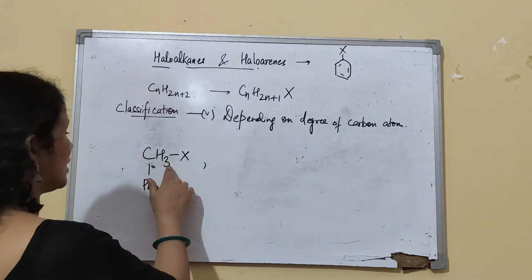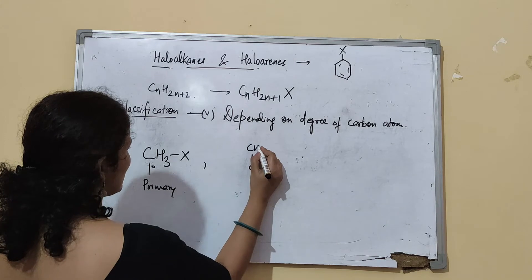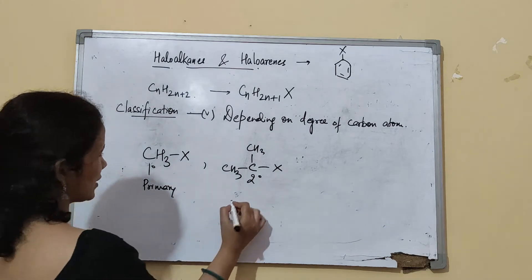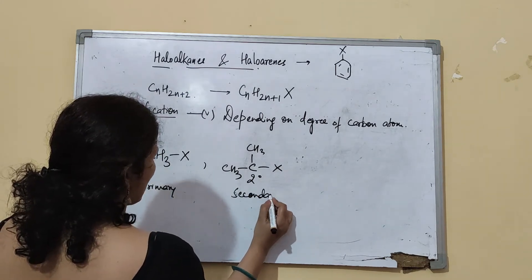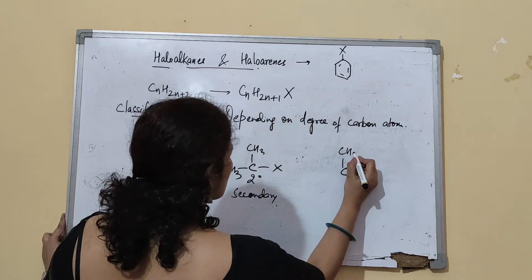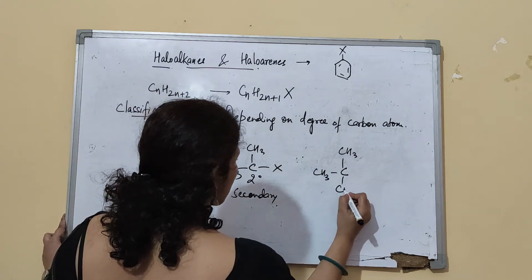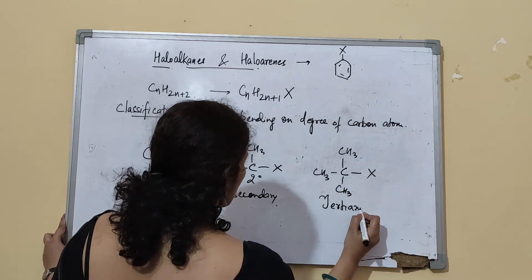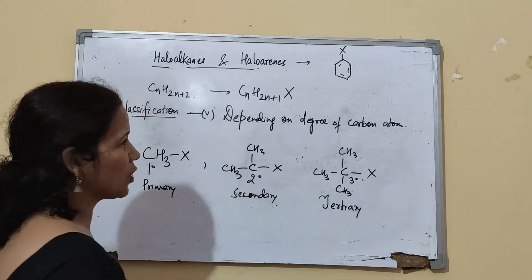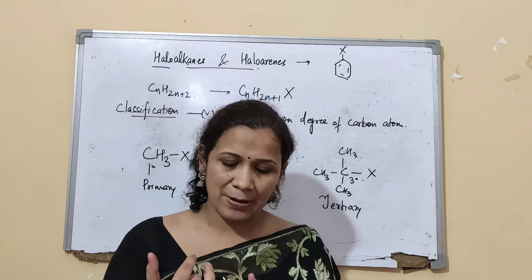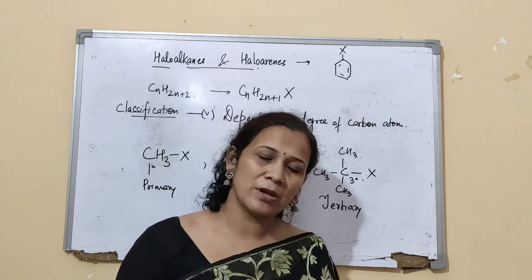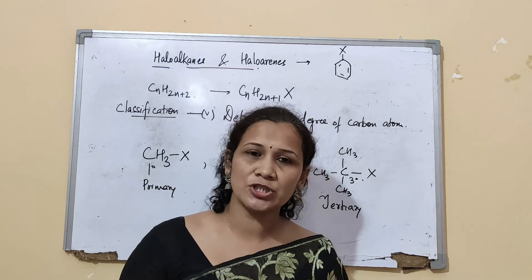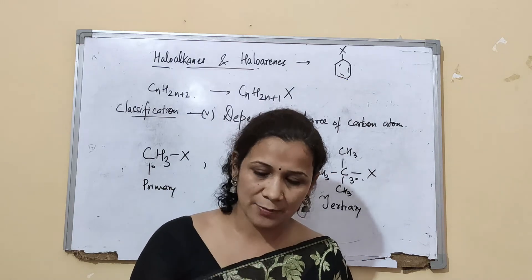For a primary haloalkane, the halogen-bearing carbon is attached to only one other carbon. For secondary, it is attached to two more carbons. For tertiary, it is attached to three more carbons. Knowing which is more reactive or less reactive is essential for understanding the reactivity, which will be covered in chemical properties.